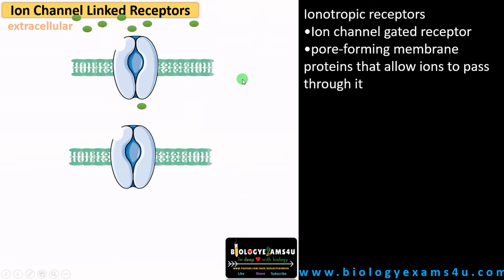Ion channeling receptors are also called ionotropic receptors. The ion channel gated receptor is actually a pore-forming membrane that permits the movement of ions across this channel. Normally these ions cannot pass through the plasma membrane — ions can only pass through these ion channels.